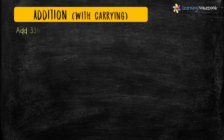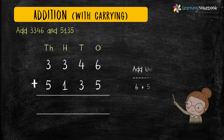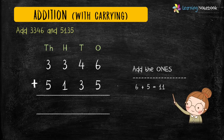The example is to add 3346 and 5135. Again, to add these two four digit numbers, first write them in columns. Now start adding from the ones place: 6 plus 5 equals 11. Since 11 is a two digit number, we will carry 1 to the tens place and 1 comes in the answer.